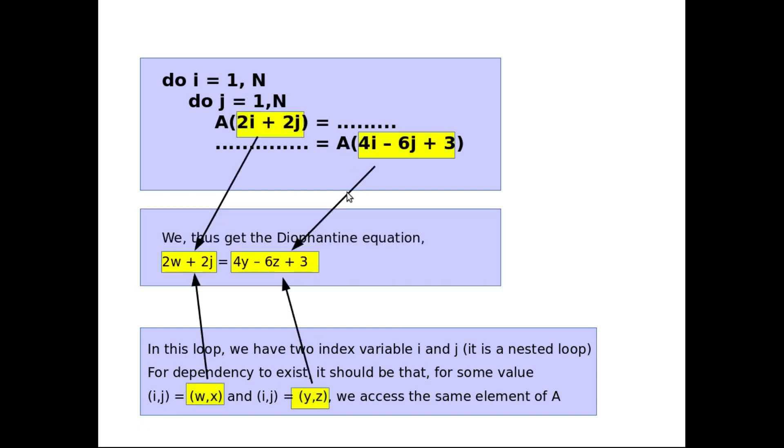In other words, for (w,x), this becomes 2w plus 2x. And for (i,j) equal to (y,z), this becomes 4y minus 6z plus 3. And when they are equal, then we have a problem.